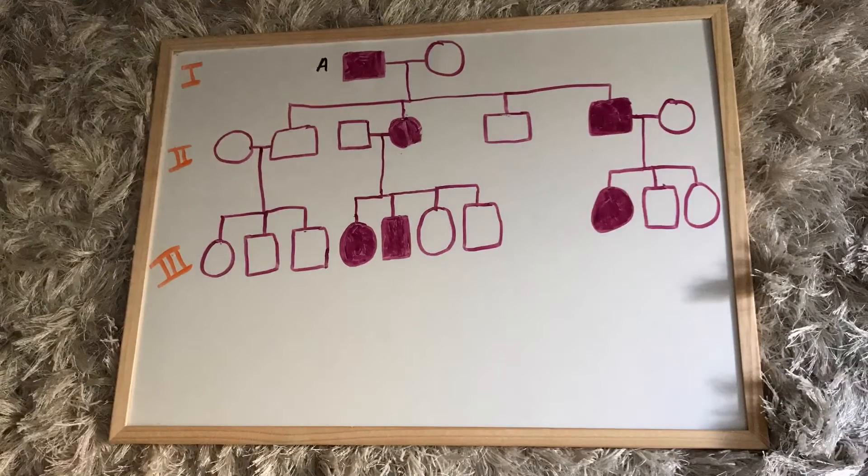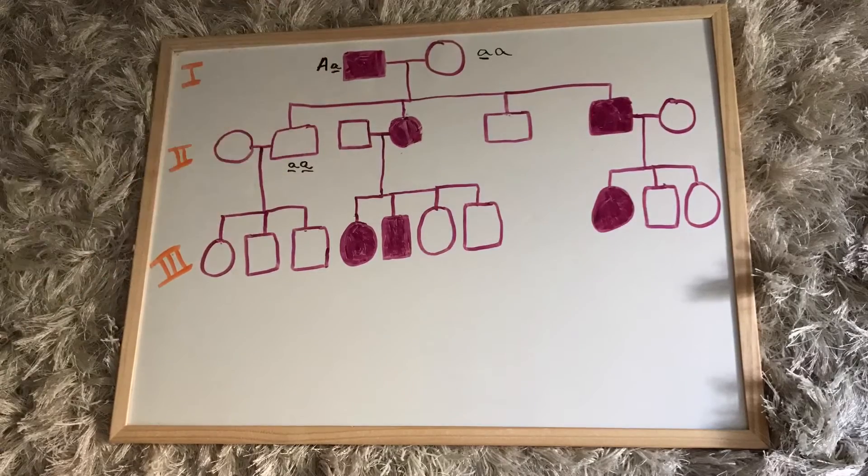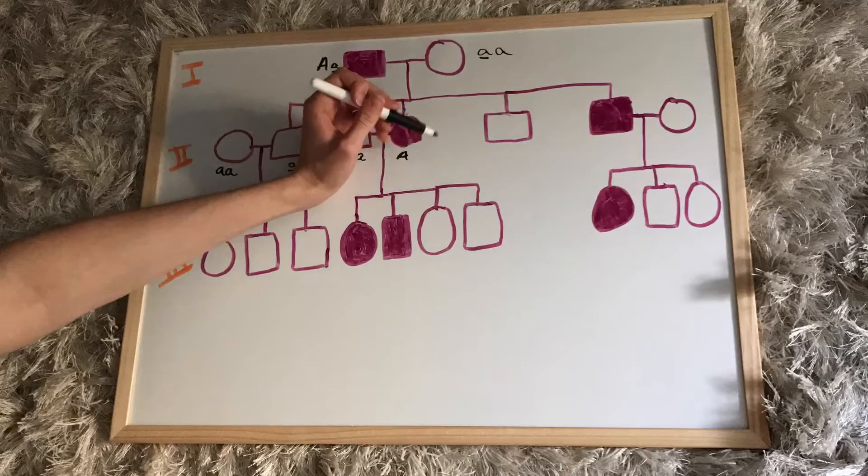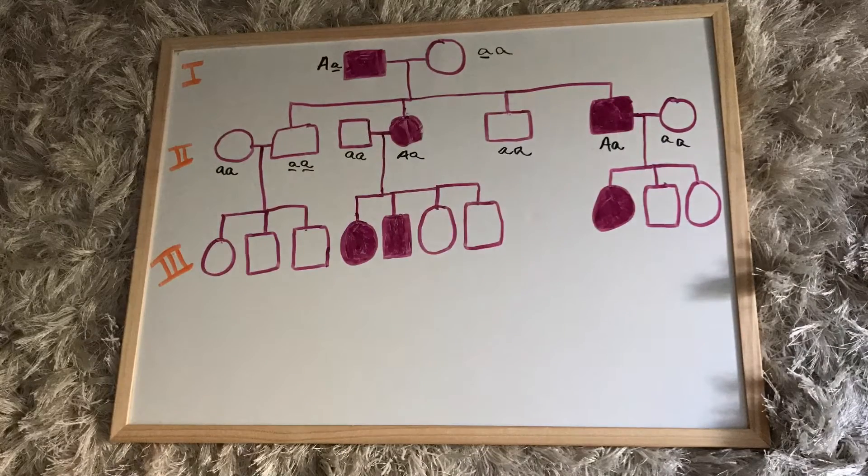So we give the first generation man a large A and the first generation woman two small As and we can start filling in children. Well since that man has unaffected children, we give him a small a and we can fill in the rest. Once we have the second generation done, then we can start filling in the third generation.